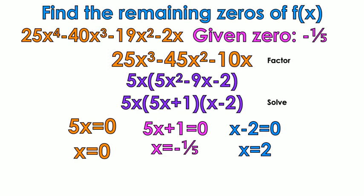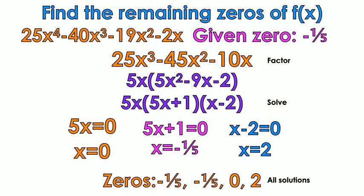So my answer is in order from least to greatest. Negative 1 fifth, negative 1 fifth, 0, and 2. Negative 1 fifth is double. So I call that having a multiplicity of 2. And that's how you find the remaining zeros of a polynomial given a zero.